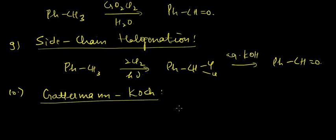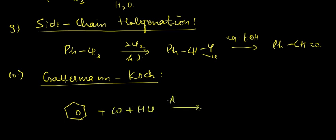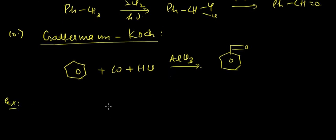Next we have the Gattermann-Koch synthesis. In Gattermann-Koch, we have a benzene ring plus CO plus HCl in the presence of AlCl3, and we'll be getting an aldehyde.